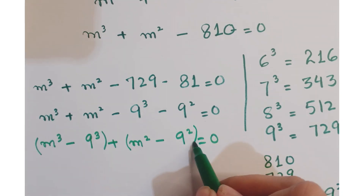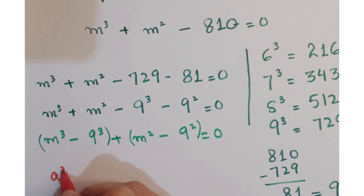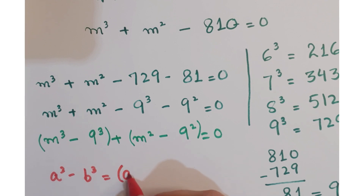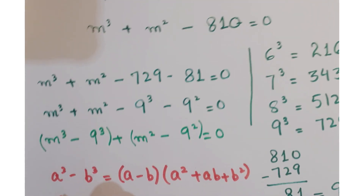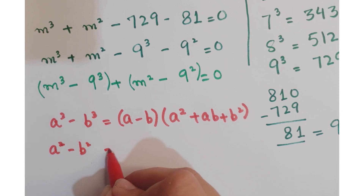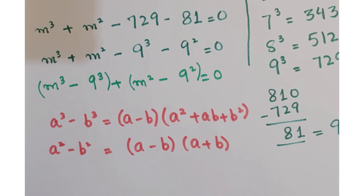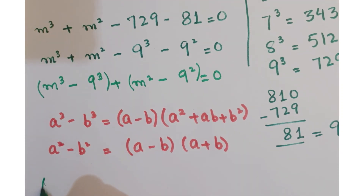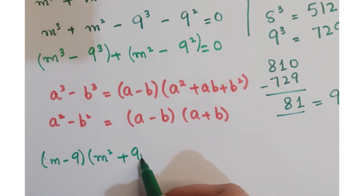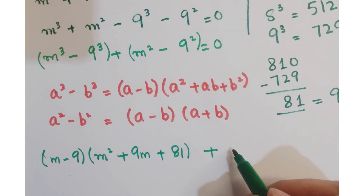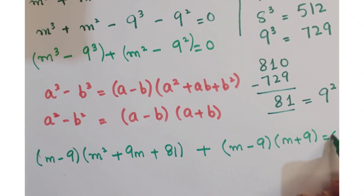Now we have these two terms and these two terms. As you know, the two algebraic formulas: a³ − b³ = (a − b)(a² + ab + b²), and a² − b² = (a − b)(a + b). Applying these two formulas, we can write m³ − 9³ as (m − 9)(m² + 9m + 81), plus here we get (m − 9)(m + 9) = 0.